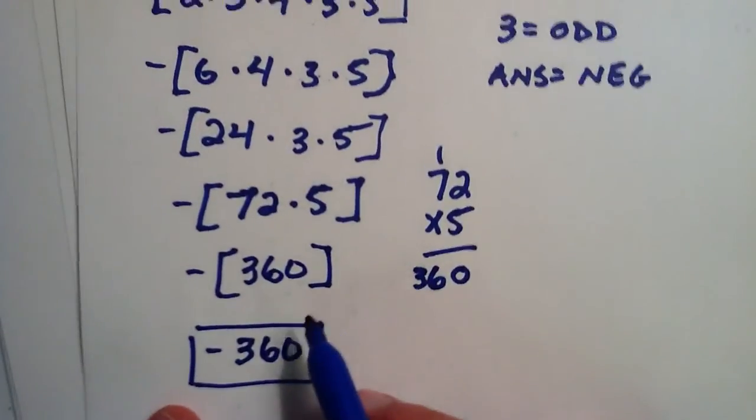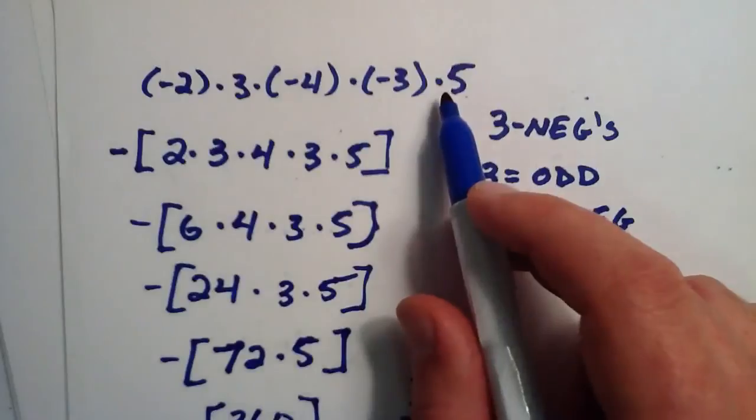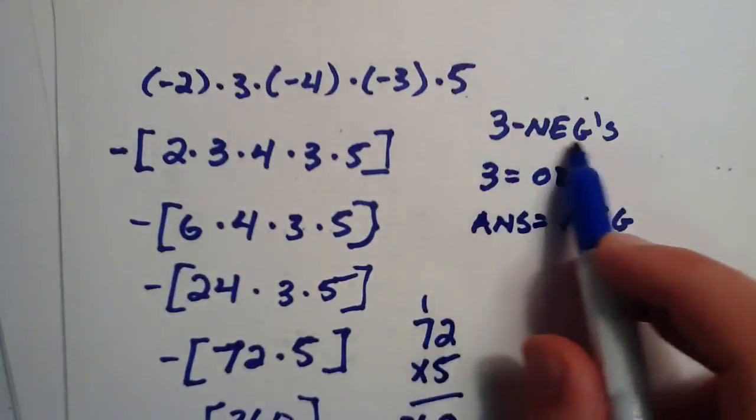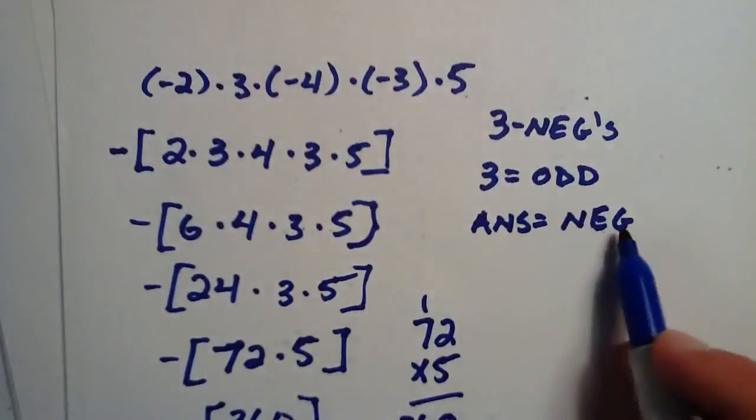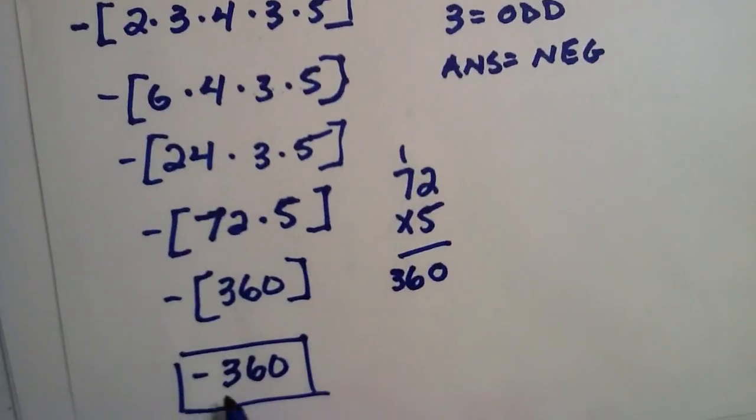We really just multiply these numbers together as if they were all positive, but because the amount of negatives in the product was an odd number, that implied that our answer was going to be negative.